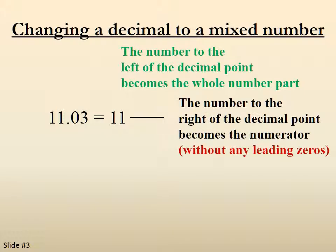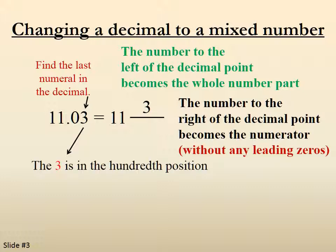The number to the right of the decimal point becomes the numerator, without any leading zeros. So it's not 03, it's just 3. The last numeral in the decimal, in this case is a 3. The 3 is in the hundredth position. So we put a hundred in the denominator. So 11.03 becomes 11 and 3 one-hundredths.